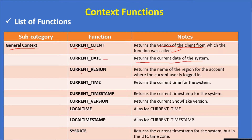current_date returns the current date of the system. current_region returns the name of the region for the account where the current user is logged in. current_time returns the current time for the system. current_timestamp returns the current timestamp for the system along with the seconds. current_version returns the current Snowflake version. local_time is an alias for current_time, and local_timestamp is an alias for current_timestamp. sysdate returns the current timestamp for the system but in the UTC time zone.